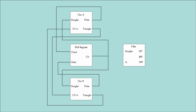In addition to the shift register and two oscillators, you generally get a filter to sculpt the timbre of the chaos. The Rungler output also modulates the frequency of this filter.